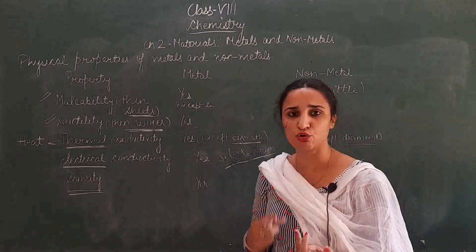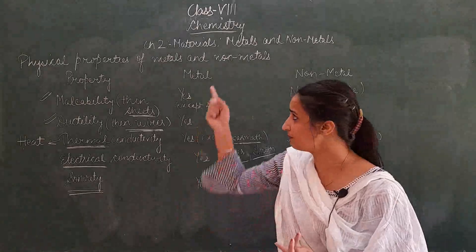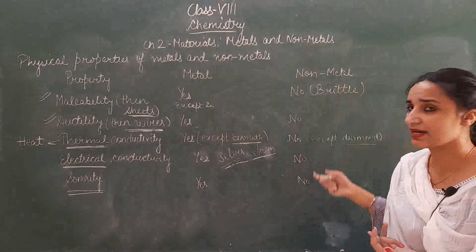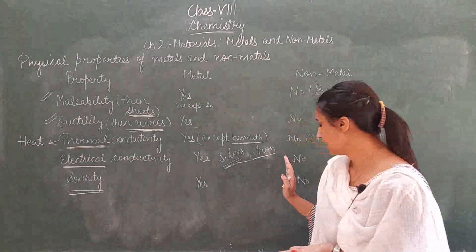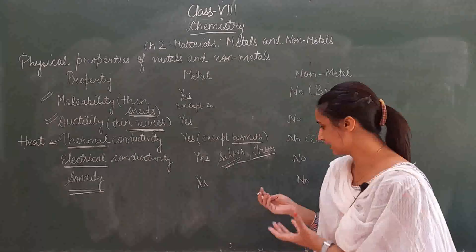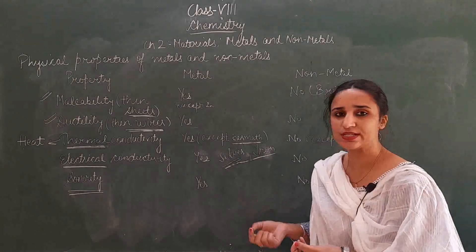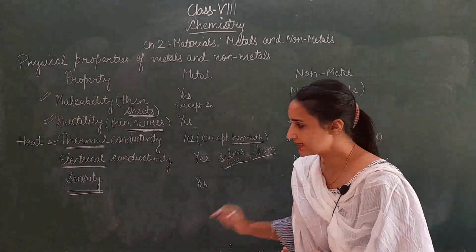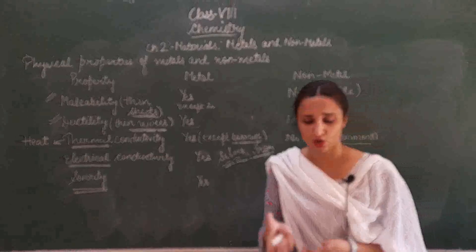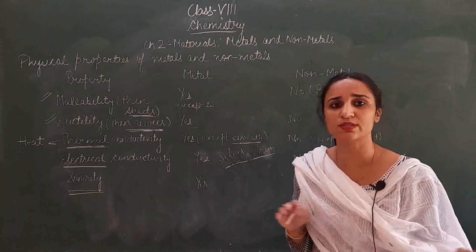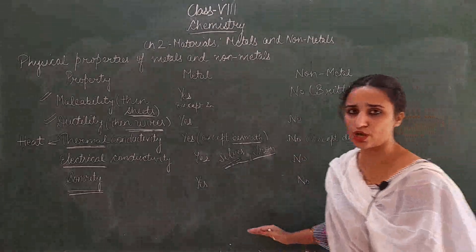That is why our doorbells and cycle bells are made from metals. Non-metals, on the other hand, are non-sonorous — they do not produce a ringing sound when struck. For example, if I have an iron rod and touch it with a wooden stick, it produces a ringing sound. But if I have a non-metal like hydrogen and touch it, no sound is produced. Non-metals are non-sonorous in nature.